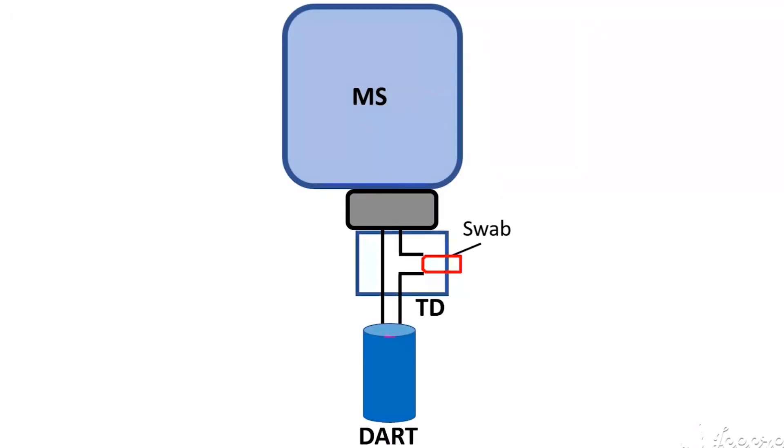When the swab is inserted into the Thermal Desorber, the drugs collected on the swab are vaporized within the desorption chamber. The generated vapors containing the drugs are pulled directly into the DART gas stream for ionization and then enter the mass spectrometer for detection.